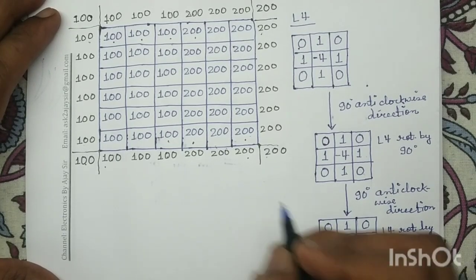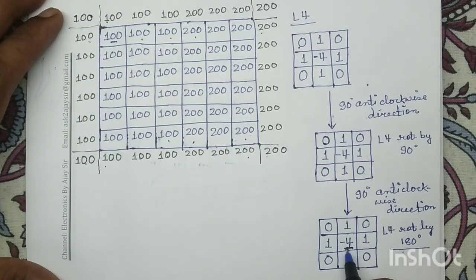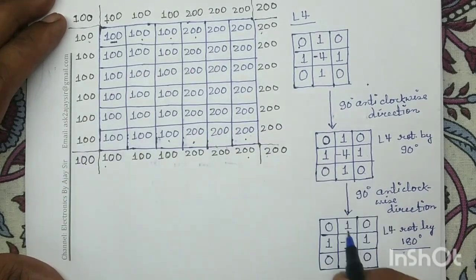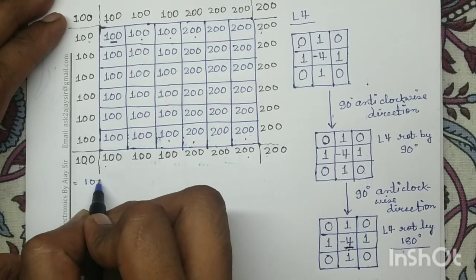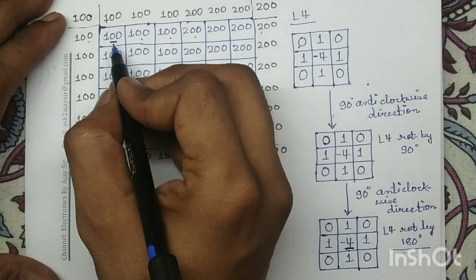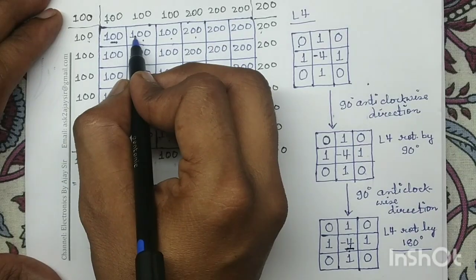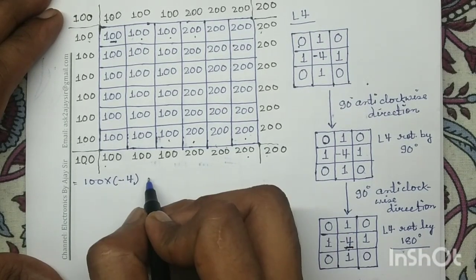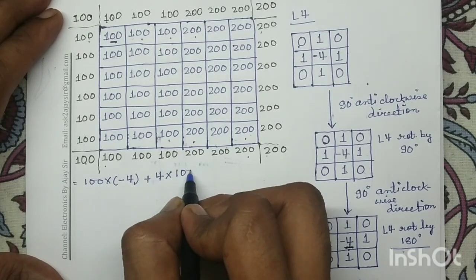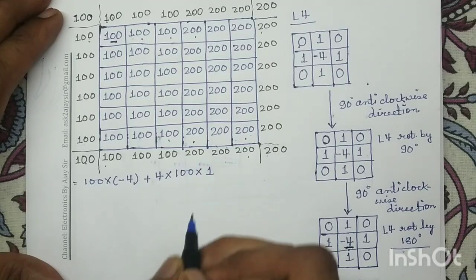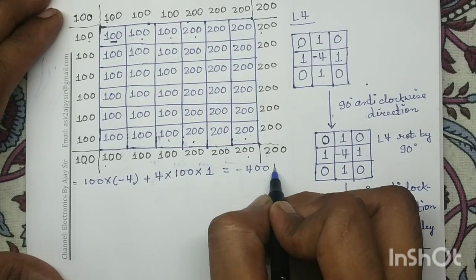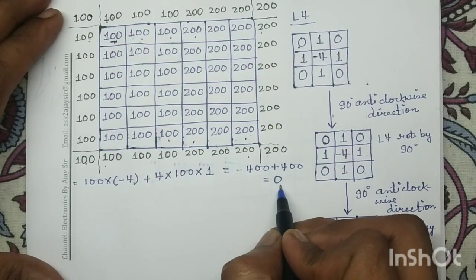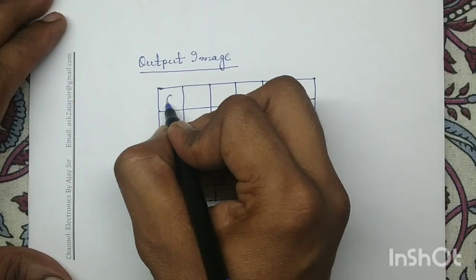First, we place the center of the rotated mask at the first pixel location and compute the response. This pixel intensity value 100 will be multiplied with filter coefficient minus 4. For this pixel, we target its 4 neighborhood pixels. All 4 neighborhood pixels have the intensity value 100, which will be multiplied with the filter coefficient 1. Computing the overall response: minus 400 plus 400, which equals 0. So for this pixel location the response is 0, and in the output image we write 0.